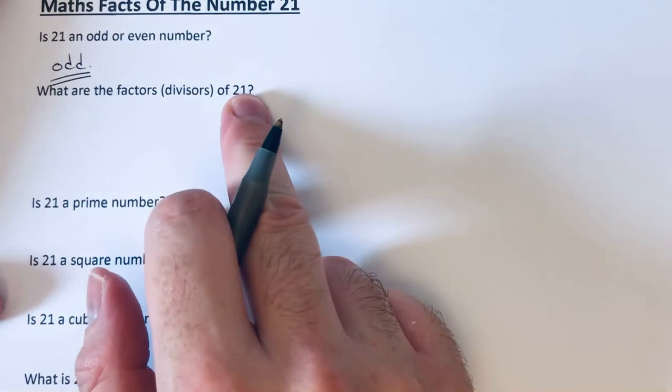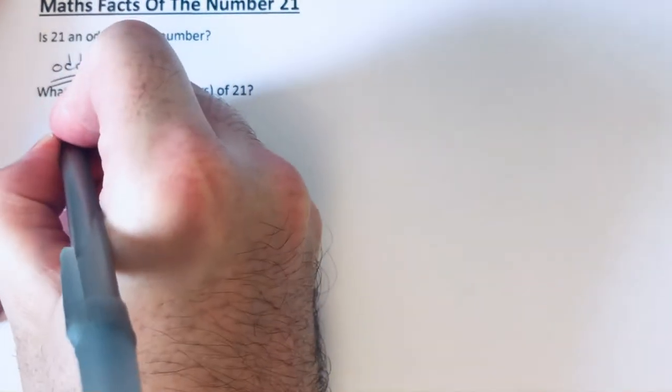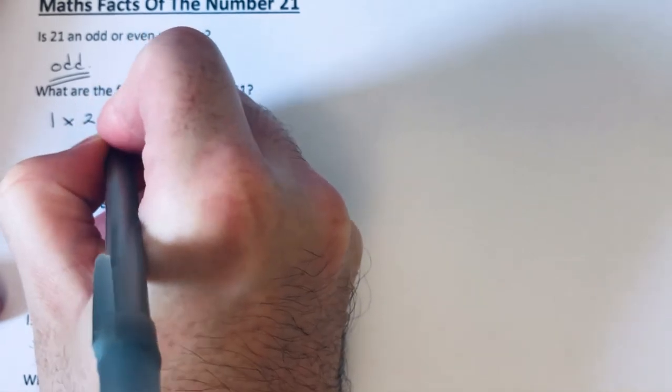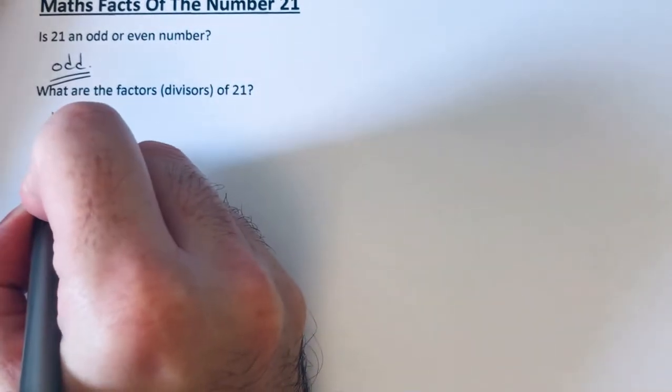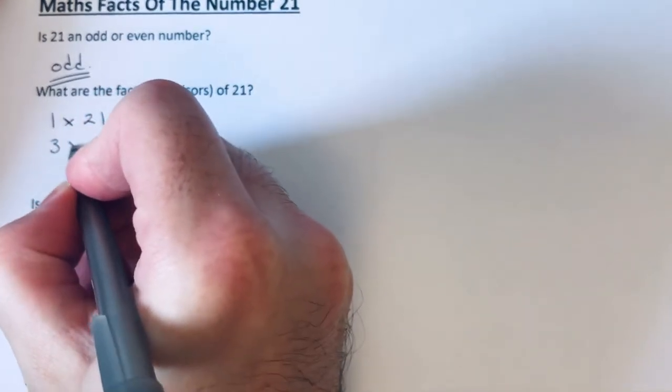Let's do the factors of 21. We'll start off with our ones. 1 goes into 21 twenty-one times. 2 doesn't go into 21, but 3 does. 3 goes 7 times.